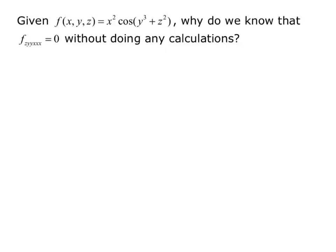So here's our next example. Given f(x,y,z) equals x² times cosine of y³ + z², why do we know that f_zyyxxx equals zero without doing any calculations?